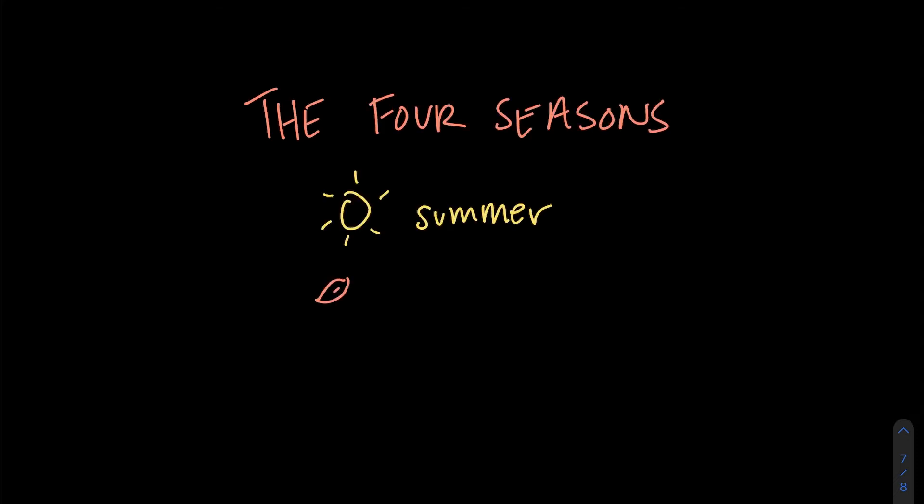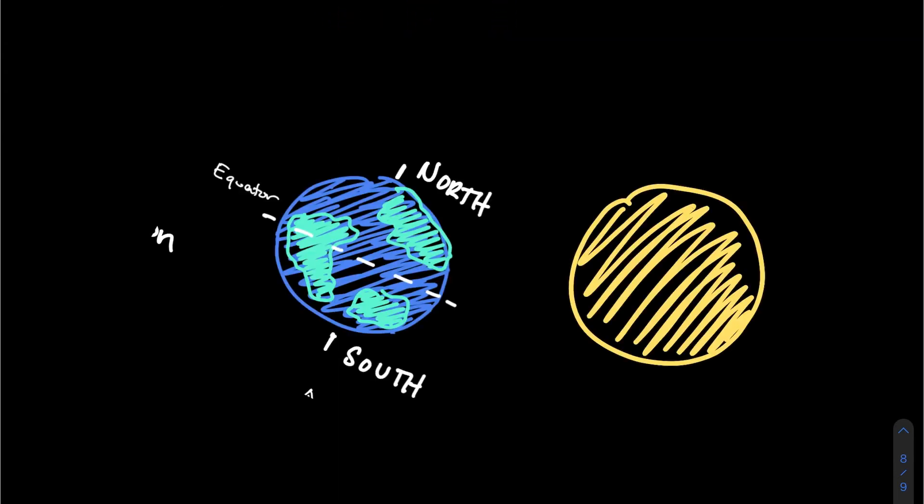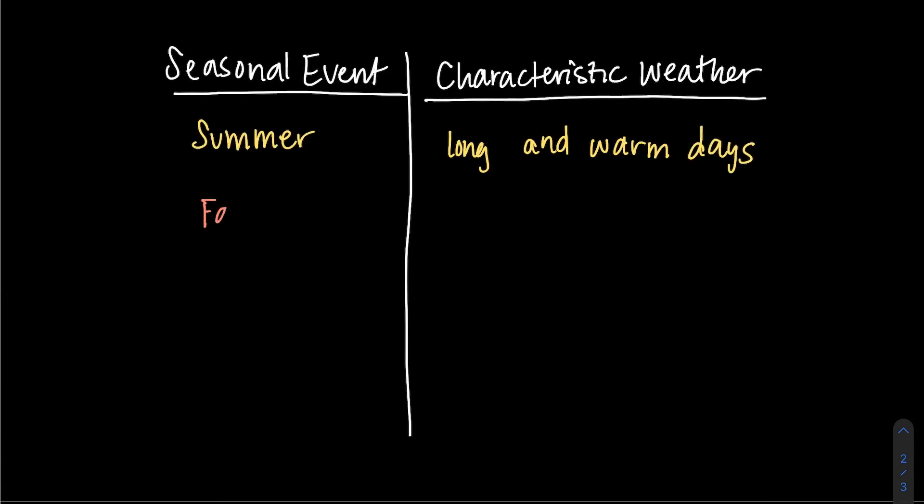So let's expand what we already know. We know there are four seasons: summer, fall, winter, and spring. And here, just in this diagram, we can kind of break those down. So when the Tropic of Cancer is tilted towards the sun, it is summer in the northern hemisphere. We experience long and warm days. In the fall, we experience cooler days, the leaves change colors, and there's a reduction in photosynthesis.